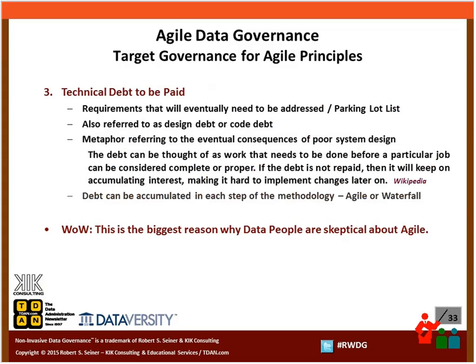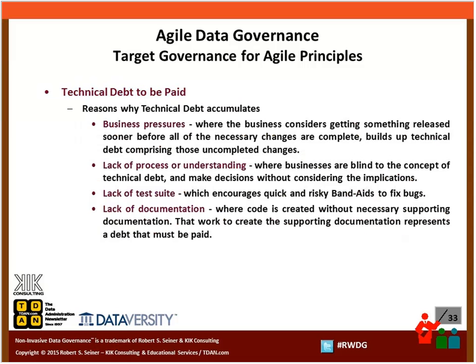The third principle is technical debt. For those not familiar, technical debt is typically requirements that get put on a parking lot list — things that need to be talked about but can't be addressed right now because it would prevent the project from moving forward. One of the biggest problems data people have with agile projects is that the technical debt is not being addressed. The truth is that the existence of technical debt isn't the problem — the problem is that the technical debt itself is not being governed. We need to apply governance to make sure technical debt does not accumulate unchecked.